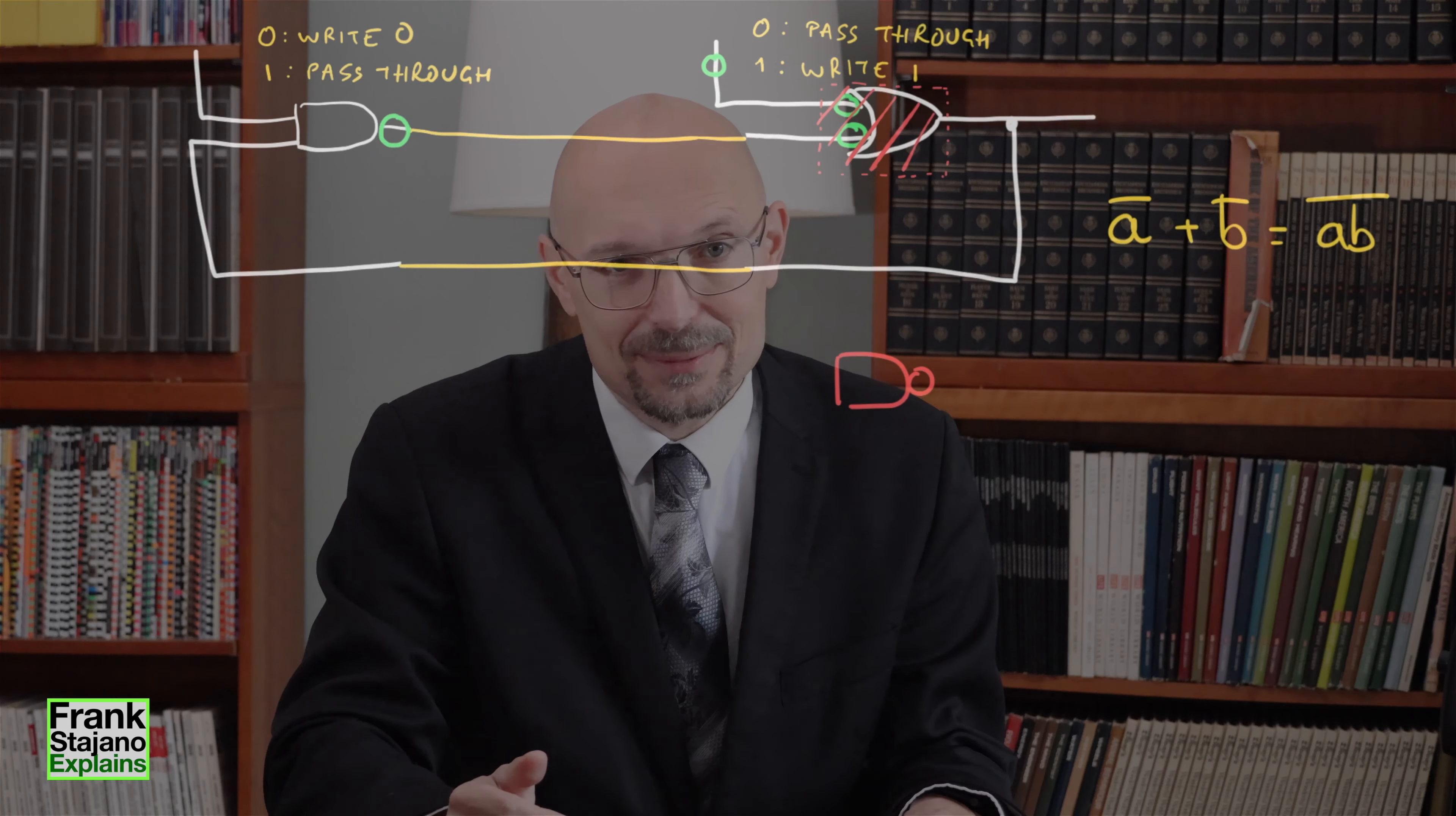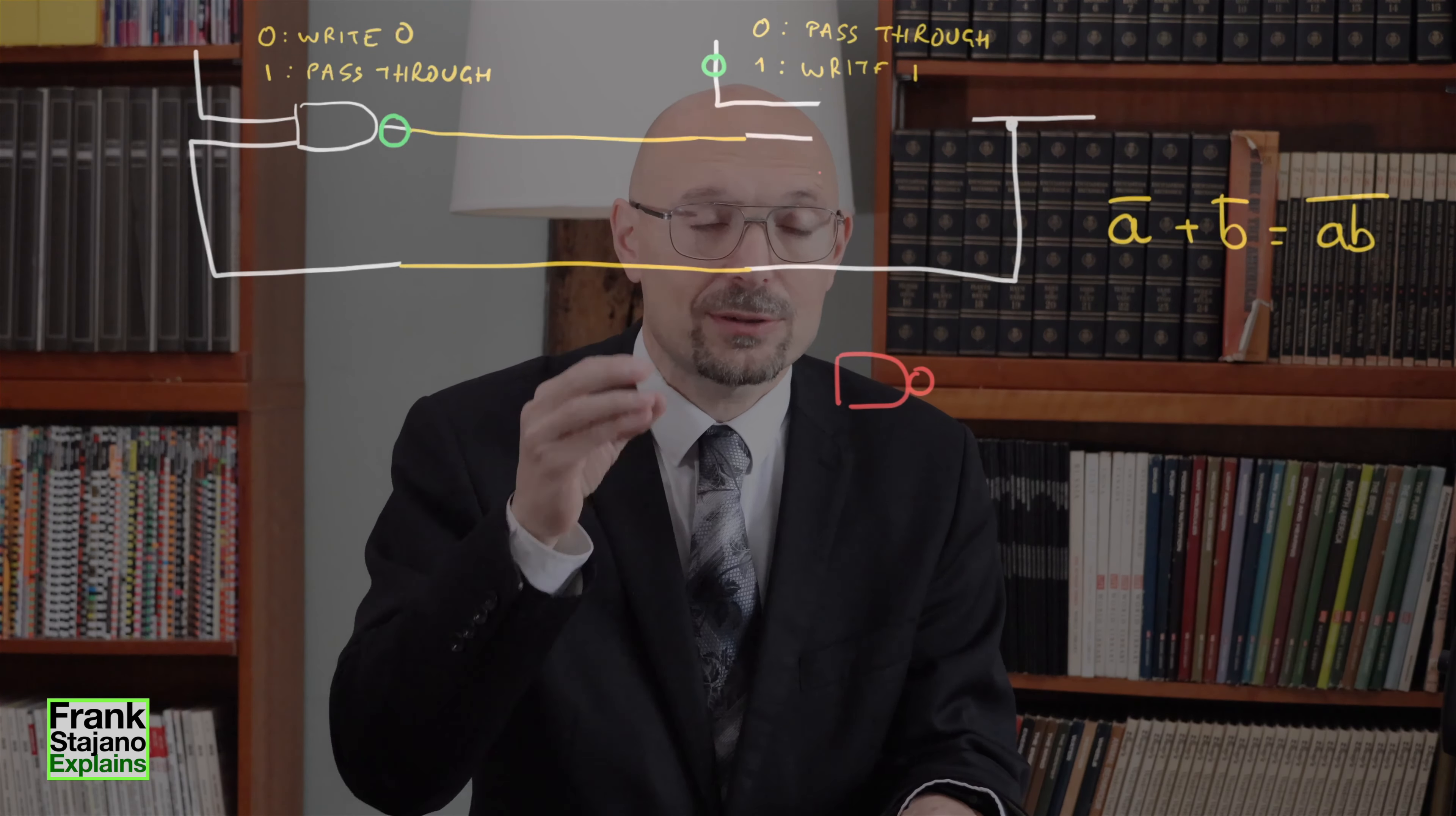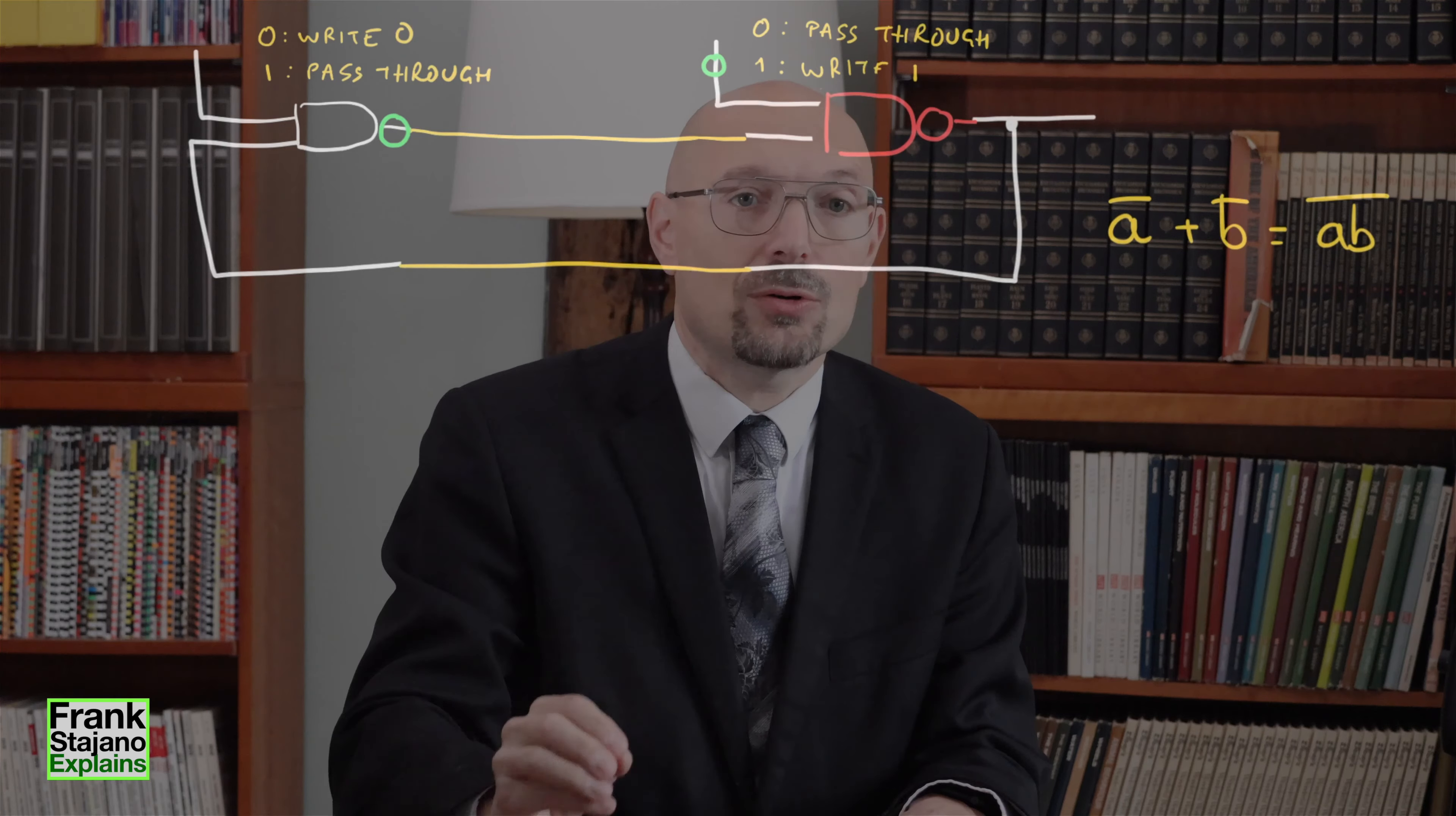That's neat because now we have two NAND gates. So the original AND gate has been turned into a NAND gate by the addition of a negation on its output. And the original OR gate has been turned into a NAND gate by the addition of negations on its inputs.